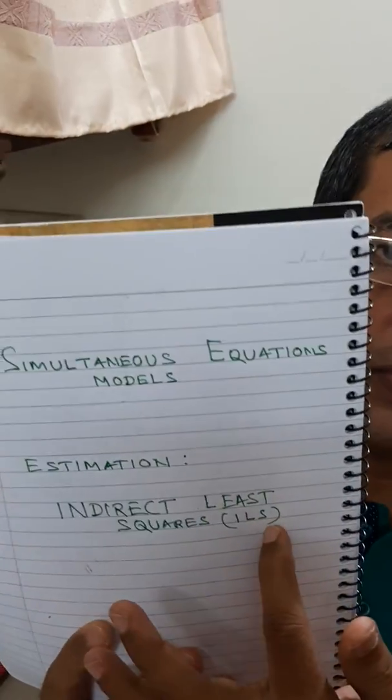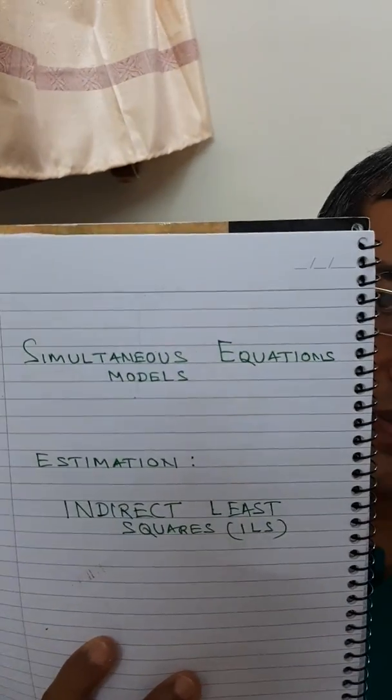We had also discussed the rank condition, which is the sufficient condition, while the order condition is the necessary condition. Today we will be discussing the Indirect Least Squares (ILS) procedure for estimating simultaneous equation systems. The ILS procedure is very simple, but it can only be applied when a particular equation in a simultaneous equation system is exactly identified.